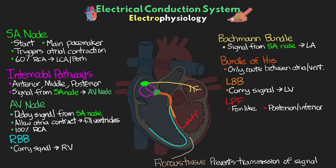Because of the wide distribution of this fiber with that fan-like appearance, it's actually the most difficult one to develop a block in. From here we have our left anterior fascicle, the other branch of the left bundle branch. This is a single-stranded fiber that sends signal to the anterior and superior parts of the left ventricle.